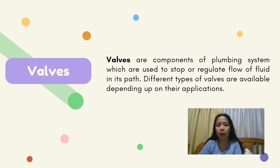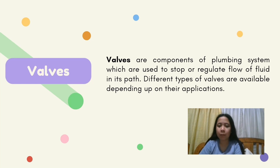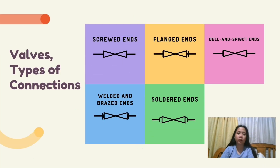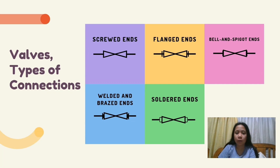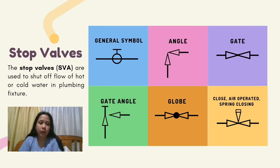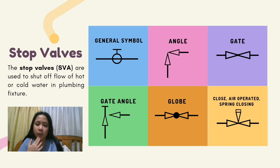Valves are components of a plumbing system used to stop or regulate the flow of fluids. Different types of valves are available depending on their applications. Types of valve connections: screwed ends, flanged ends, bell and spigot ends, welded and brazed ends, and soldered ends. Stop valves are used to shut off flow of hot or cold water in plumbing fixtures. Symbols include: general symbol, angle, gate, gate angle, globe, and closed air-operated spring closing.